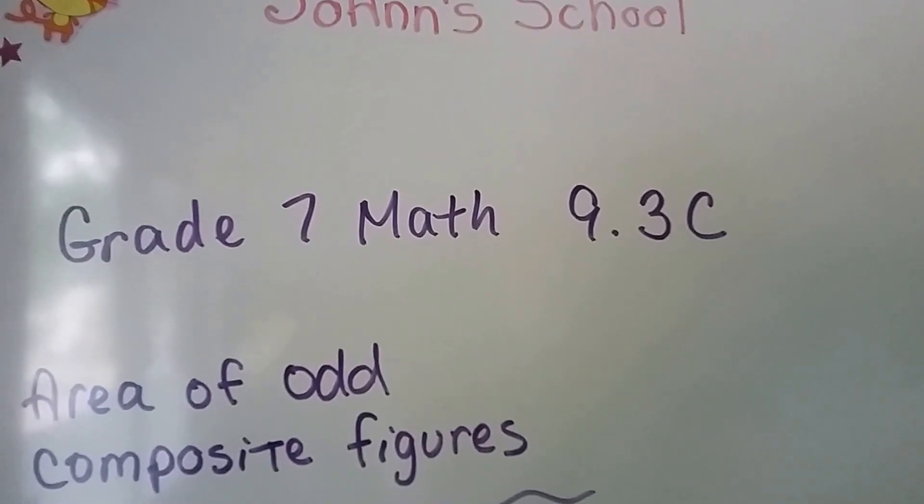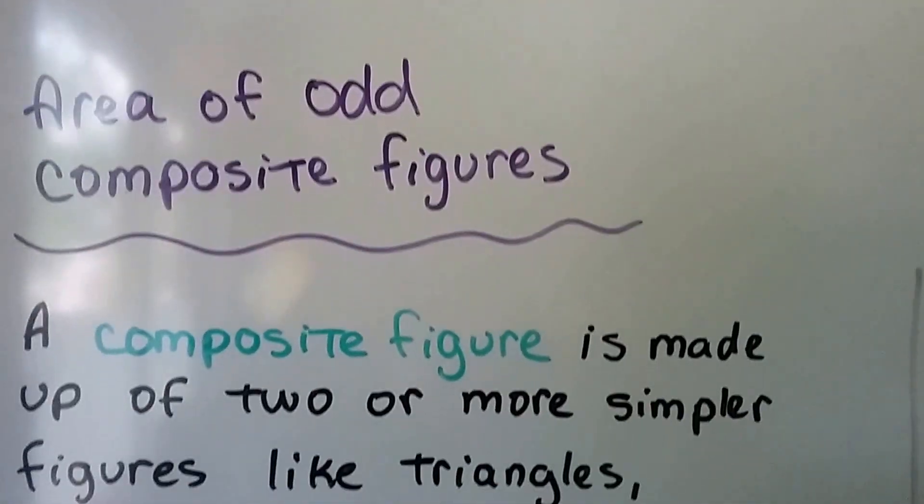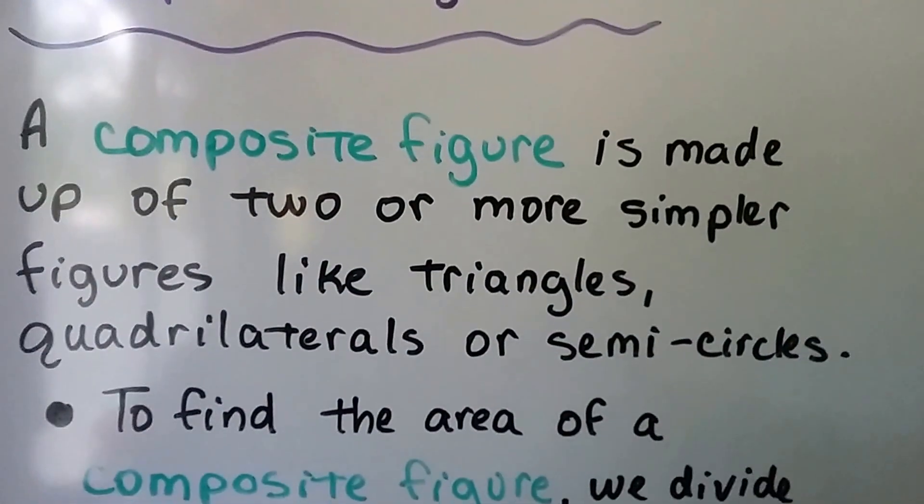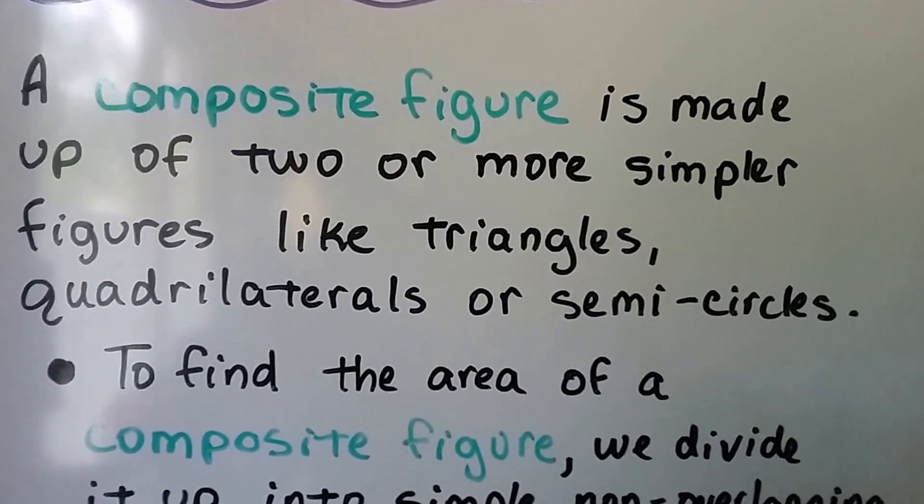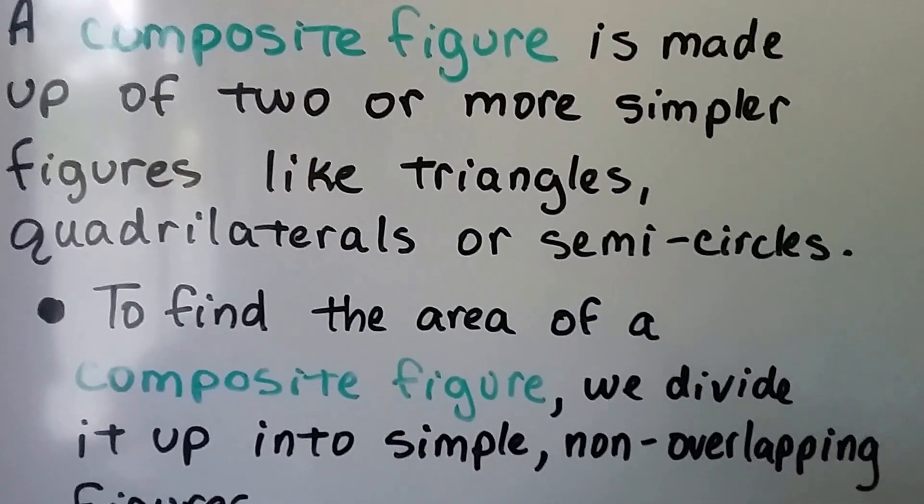We're at Grade 7 Math 9.3C, and this is the area of odd-shaped composite figures. A composite figure is made up of two or more simple figures like triangles, quadrilaterals, or semicircles.